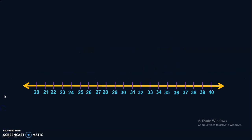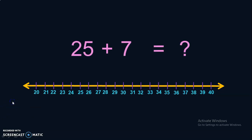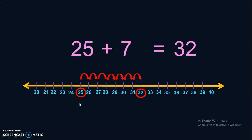Let us do another example. Here we have a number line with numbers 20 to 40. A number line need not always begin with 0. Based on the calculation you want to do, you could start and end the numbers accordingly. In this case, I am going to do an addition of 25 plus 7, so I have chosen a number line with numbers 20 to 40. First, identify the number 25 in the number line, then make 7 jumps: 1, 2, 3, 4, 5, 6, 7. You will arrive at the number 32. So, 25 plus 7 will give you the answer 32.